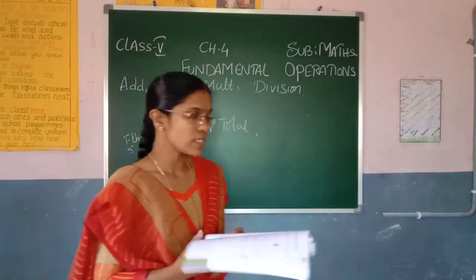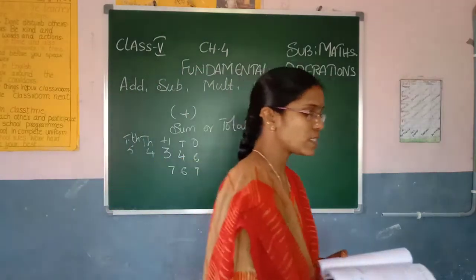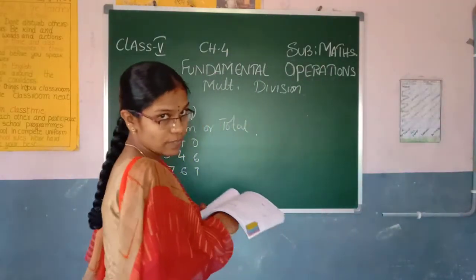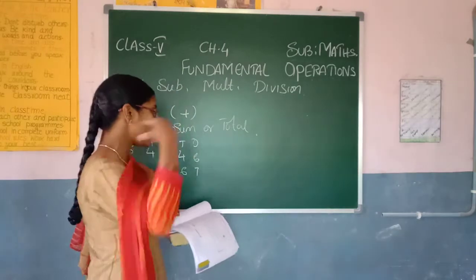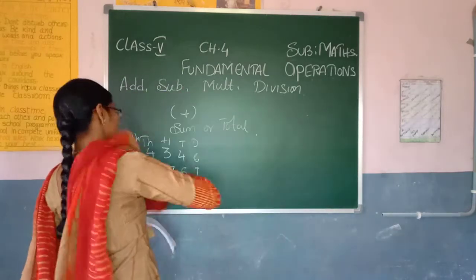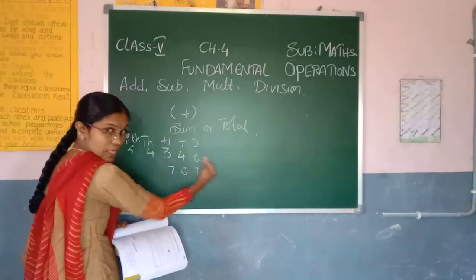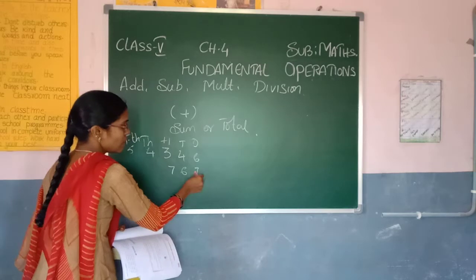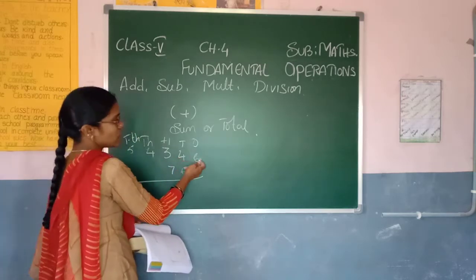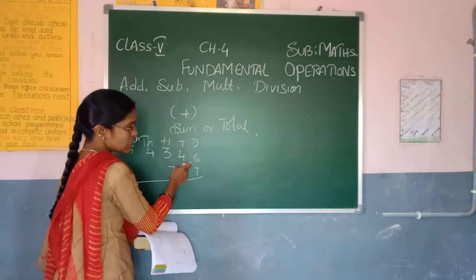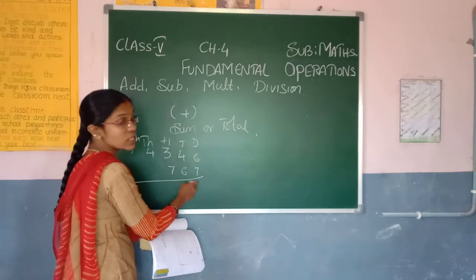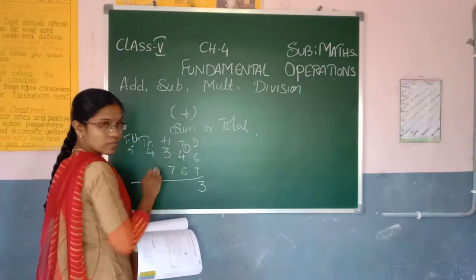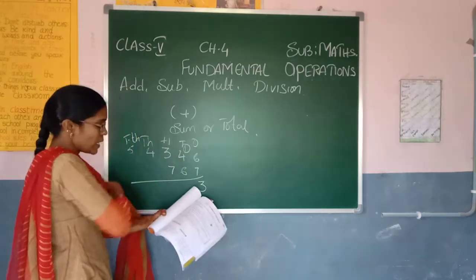First, we add the ones, then the tens, then we go to the hundreds. When doing addition, first of all we have to go from the right side — we add from the ones place. For example, six plus seven equals thirteen. Write three here and carry one to the tens place. Like this, we will do.